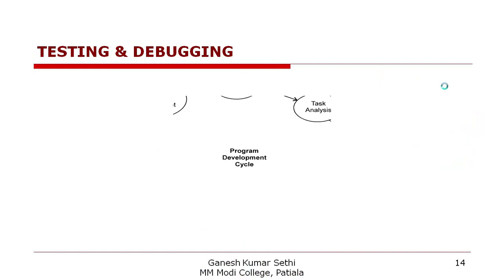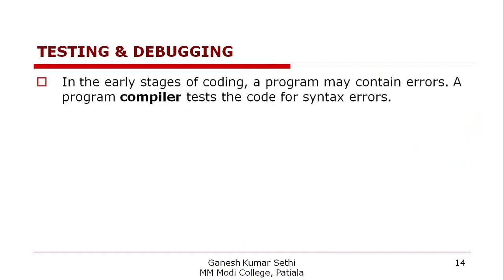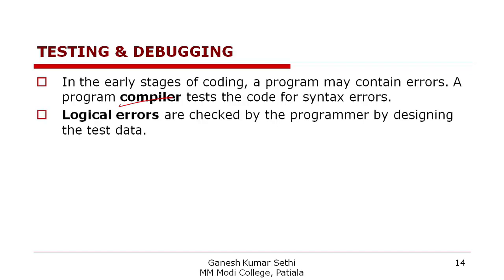When the compilation process is applied, it may find errors in the program. Syntax errors are detected by the compiler, while logical errors must be checked by the programmer. An error in a computer is known as a bug, and the process of removing errors is called debugging. Whatever errors exist must be removed — this process is called debugging.